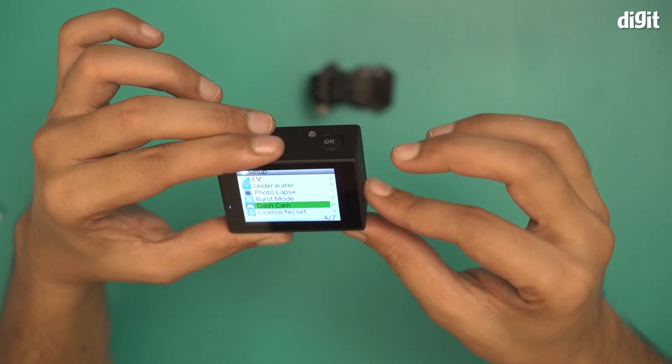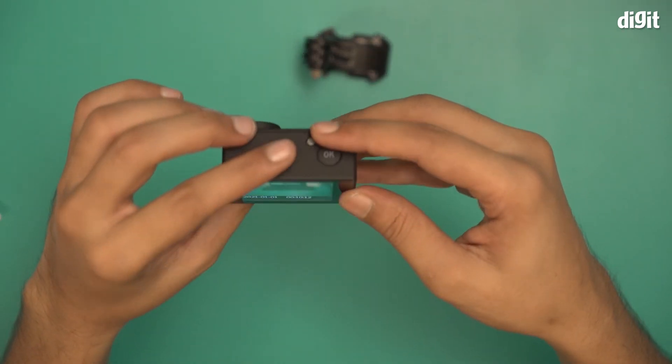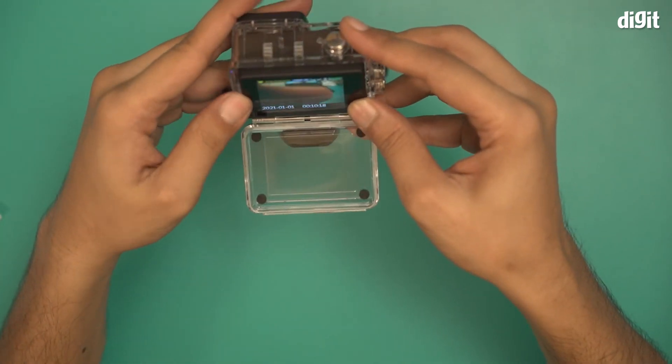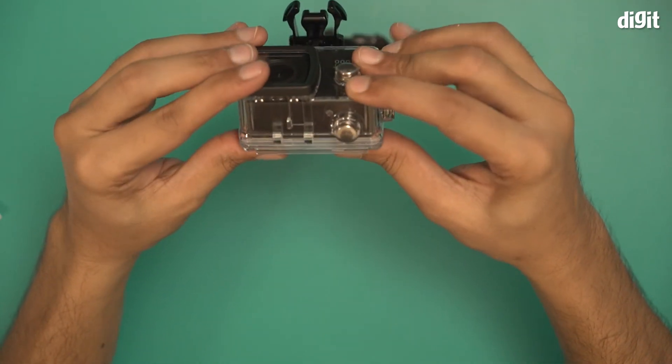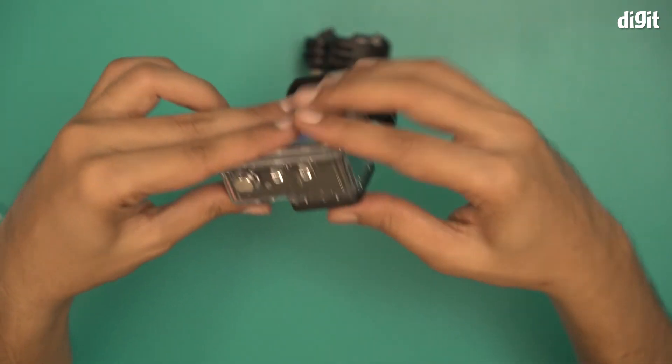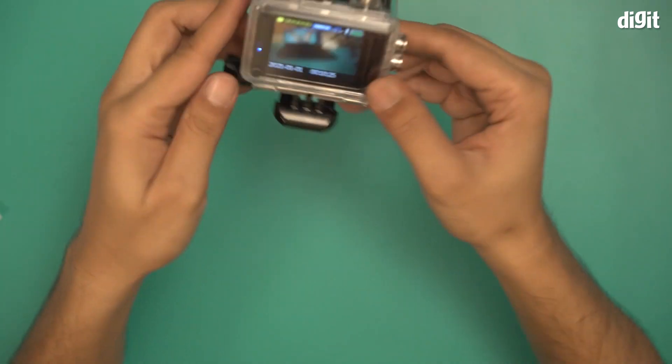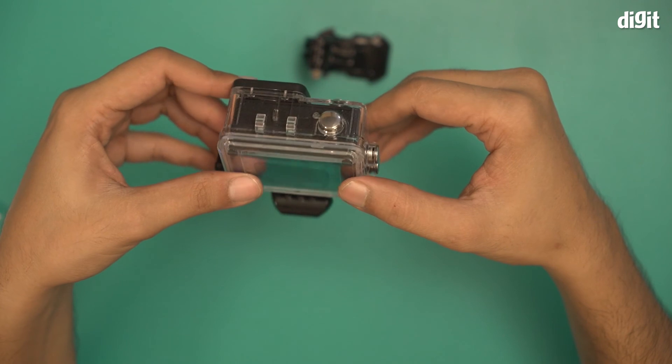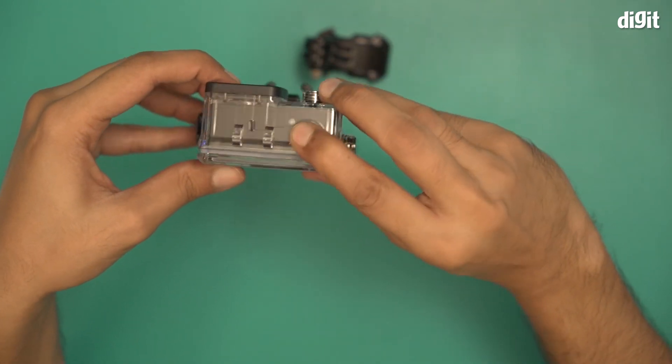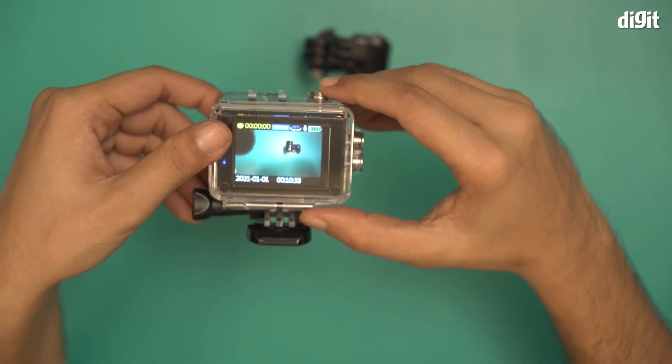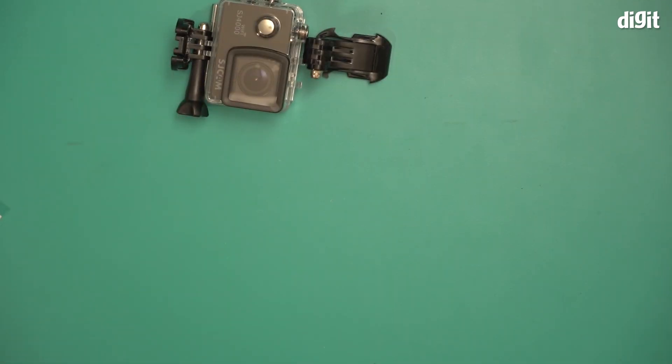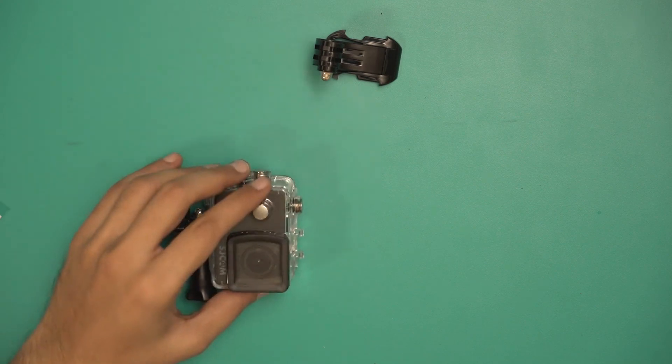Once you've decided what you're going to do, you get the casing and put the camera inside like so. Now basically you're good to go. You can mount it on any surface, any moving surface or otherwise, press record like so to start recording. And that's how you set up the SJ4000 WiFi action camera. Thank you for watching.